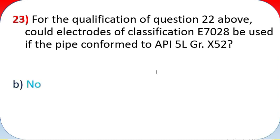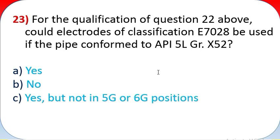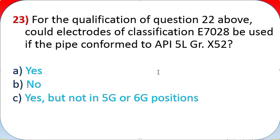Question 23: For the qualification of question 22 above, could electrodes of classification E7028 be used if the pipe conforms to API 5L GR X52? A - yes, B - no, C - yes but not in 5G or 6G positions.